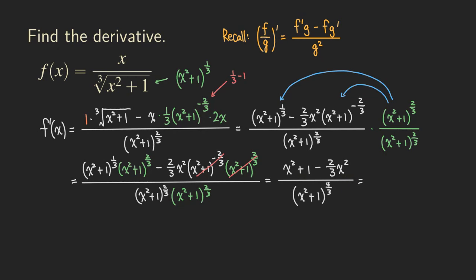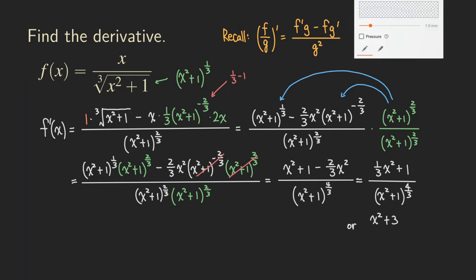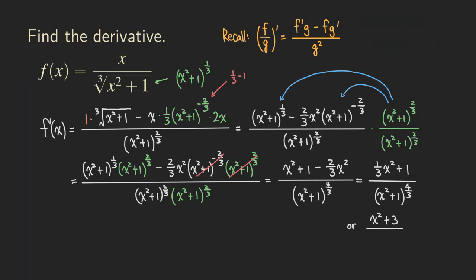The last step is combining like terms in the numerator. So we are getting x squared plus 1 minus 2 over 3 x squared, which simplifies to 1 over 3 x squared plus 1, all over x squared plus 1 to the 4 over 3. If you factor out 1 over 3, you can also write the answer as x squared plus 3, all over 3 times x squared plus 1 raised to the 4 over 3 power.